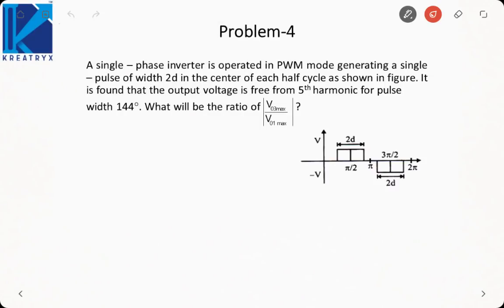In our next problem it is saying a single phase inverter operated in PWM mode generating a single pulse of width 2D in the center of each half cycle as shown in the figure. It is found that output voltage is free from fifth harmonic for pulse width of 144 degrees. That I just derived. If the pulse width is 72 or 144, it will be free from fifth harmonic.